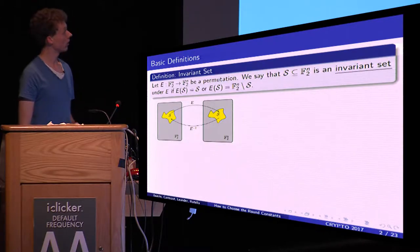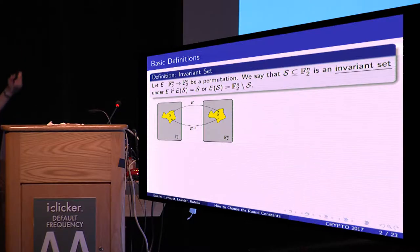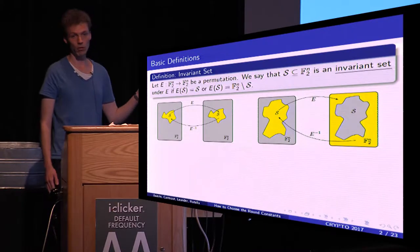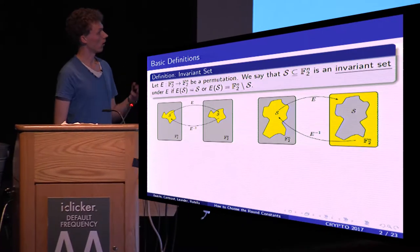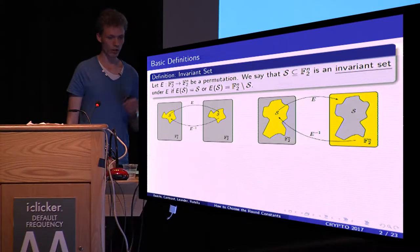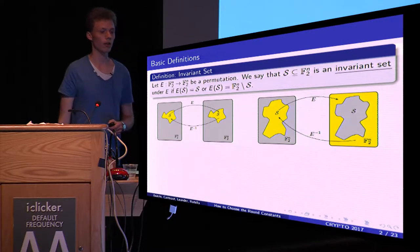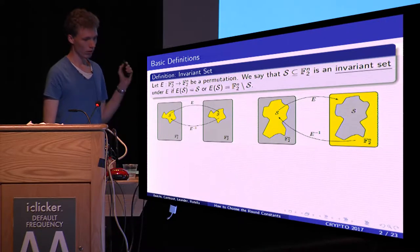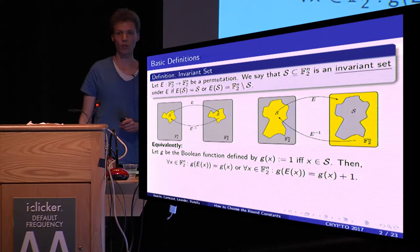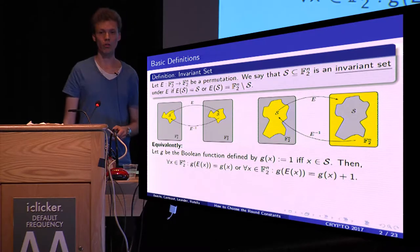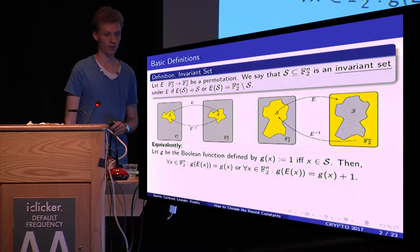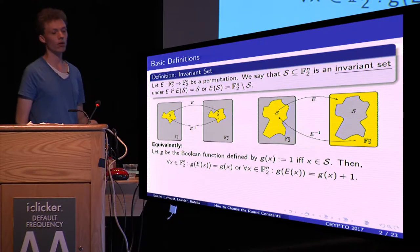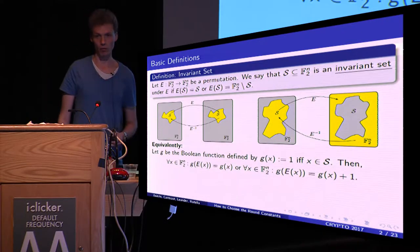To put it in a picture: in the first case S has to be stable under E. In the second case, every element of S is mapped outside of S, which means that for the inverse function, every element outside of S must be mapped into S. It also becomes clear that the size of S must equal the size of its complement. Equivalently, we can define this invariant set by a Boolean function G, the indicator function of S, and then for all X, G evaluated on E of X equals G of X plus 1.